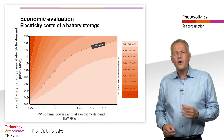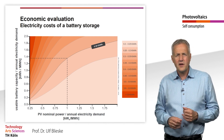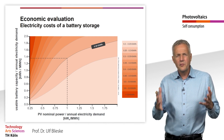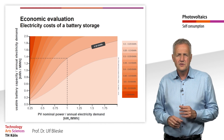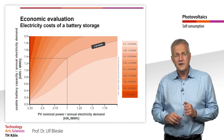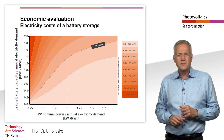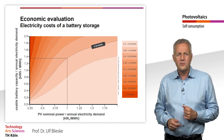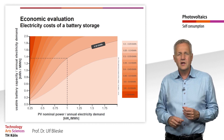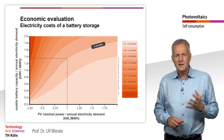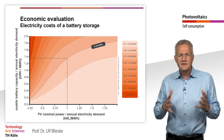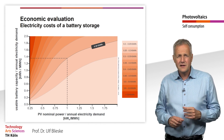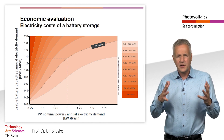In Germany, more than 50% of all newly installed PV systems are planned with storage systems today. In other countries, this development is somewhat slower due to lower electricity costs or higher feed-in tariffs. However, the expansion of photovoltaics is increasing worldwide, so the problem of grid integration is becoming an issue in more and more countries. It is therefore expected that the economic efficiency of battery storage systems will also increase significantly in other countries in the coming years.